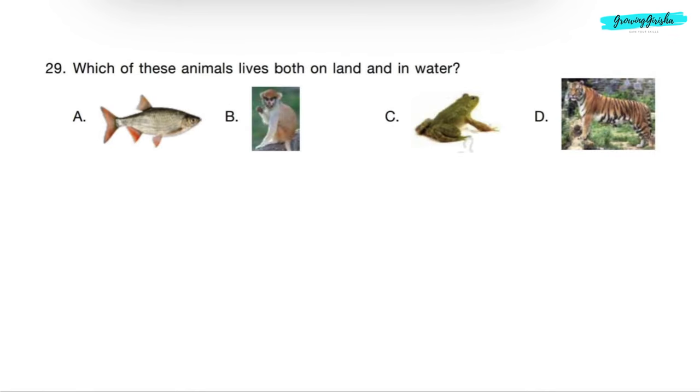Question 29: Which of these animals lives both on land and in water? Option A shows a fish which lives only in water. Option B shows a monkey which lives only on land. Option C shows a frog which lives on both land and in water. So option C will be the correct answer. Option D shows a tiger which lives only on land.